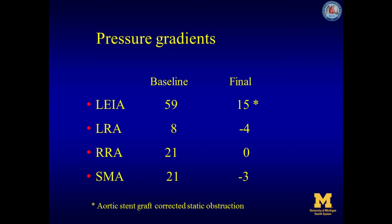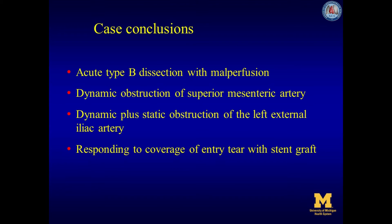The final gradients show improvement in all visceral vessels, and the aortic stent graft corrected the static obstruction. In summary, this case involves acute type B aortic dissection with malperfusion, featuring dynamic obstruction of the superior mesenteric artery and dynamic plus static obstruction of the left external iliac artery. Both obstructions resolved after coverage of the entry tear with the stent graft.